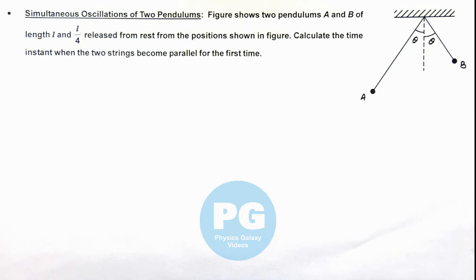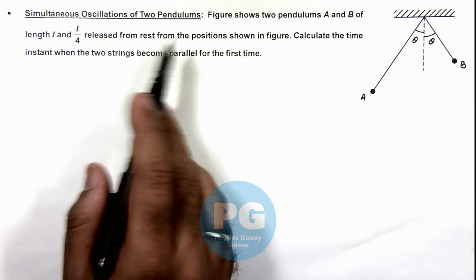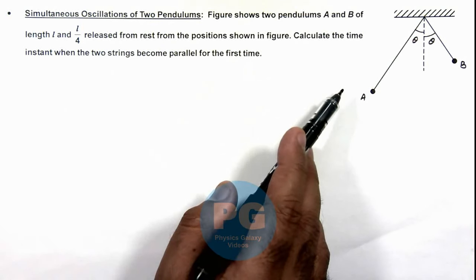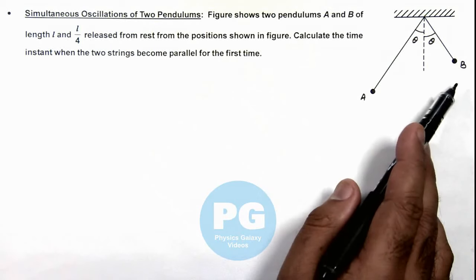In this illustration we'll discuss simultaneous oscillations of two pendulums. Here we are given that the figure shows two pendulums A and B which are of length